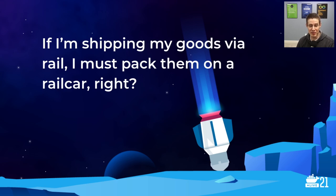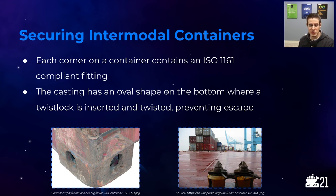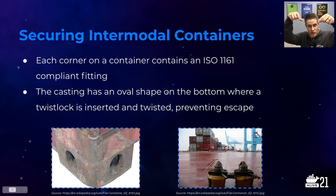I did quite a bit of research in preparation for this talk and learned about the standards of intermodal shipping containers. Each corner of a shipping container meets the specifications of ISO 1161, which defines the fitting, size, dimensions, weight capacity, and everything for these corner castings. The casting has an oval shape on the bottom where a twist lock fits in and then twists — because the hole is oval, when it twists, it can no longer come out, preventing escape.